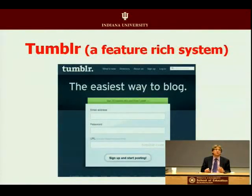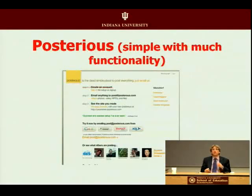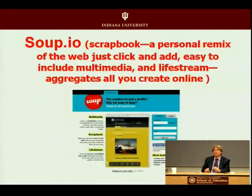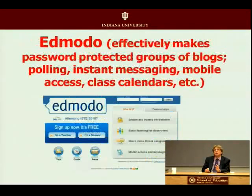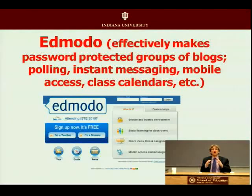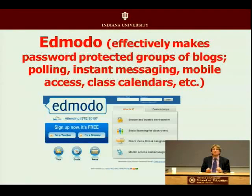Tumblr offers more features and a very rich media set. Posterous is simple but functional. Supio goes beyond blogging into more of a scrapbook with multimedia embedded in it. Edmodo may offer more protected blogging spaces with more privacy embedded in it and more opportunities for sharing notes and messages.